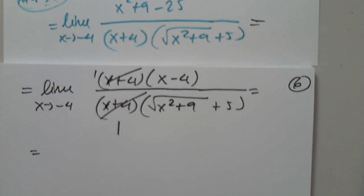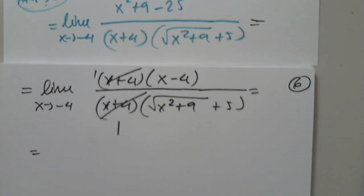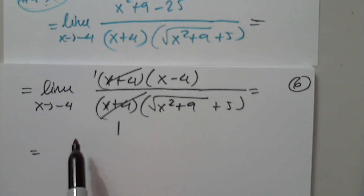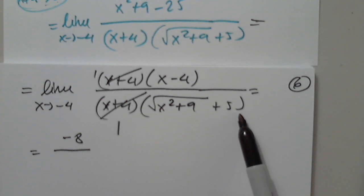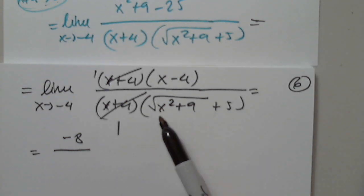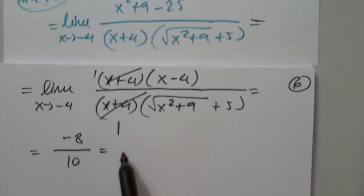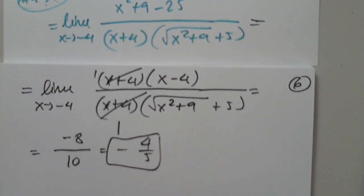What did we get? The numerator goes to negative 8 — x minus 4 at negative 4 gives negative 8. The denominator: square root of 16 plus 9 is 5, plus 5 gives 10. We simplify and get negative 4 over 5. Perfect. Awesome. Great job.